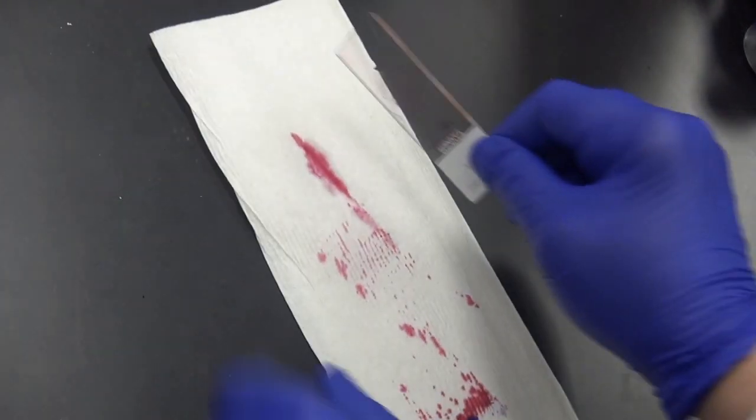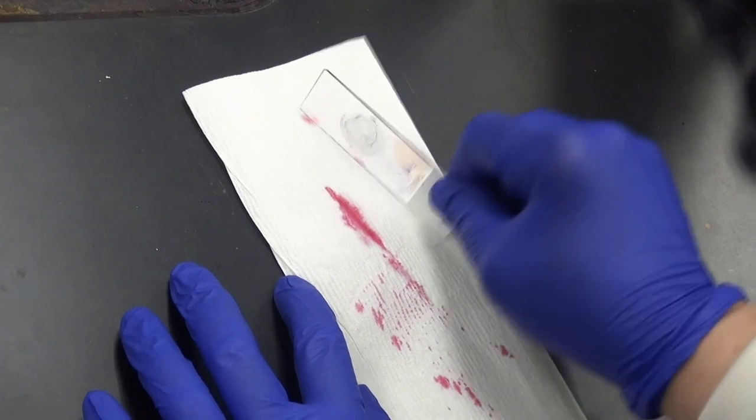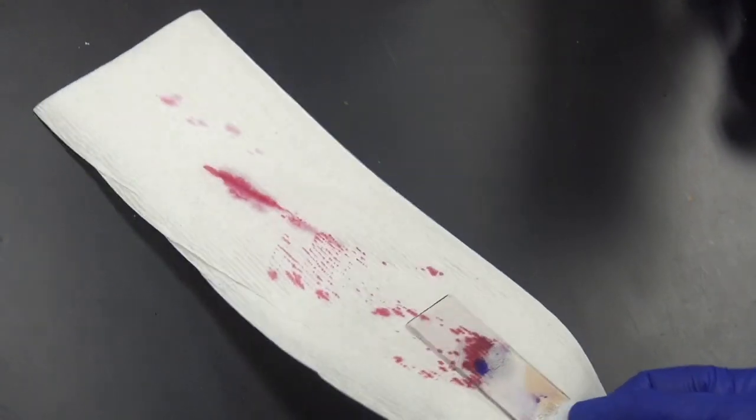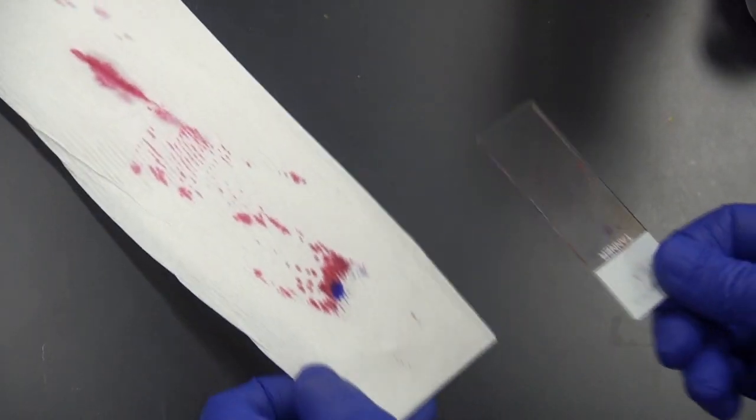The slide can be partially dried by running the edge over a paper towel and by wiping the back of the slide. Do not wipe off the front or you will wipe away your smear. Place the slide on the slide warmer to finish drying.